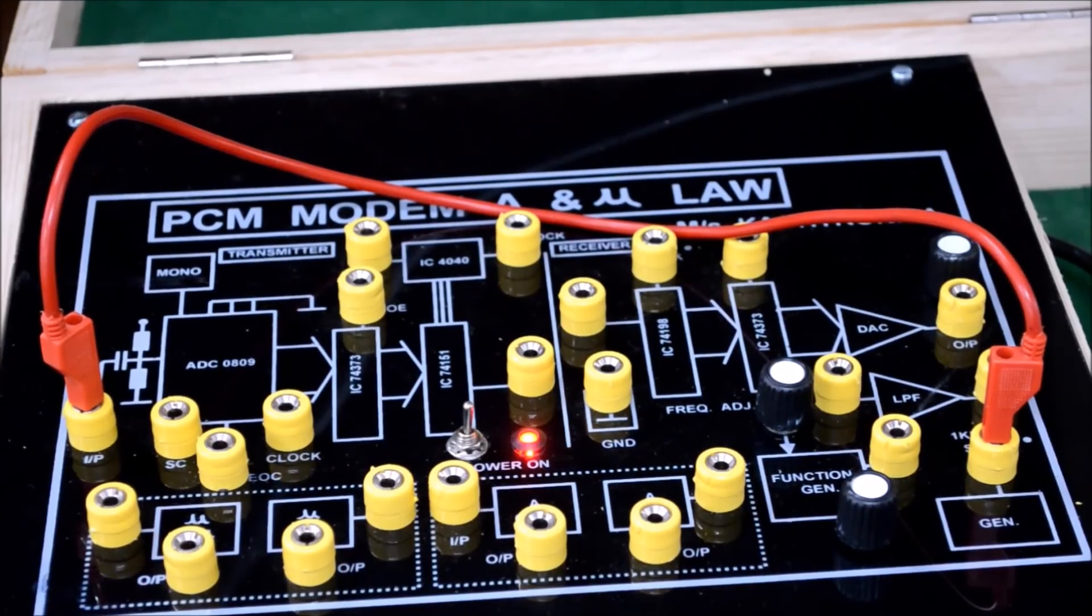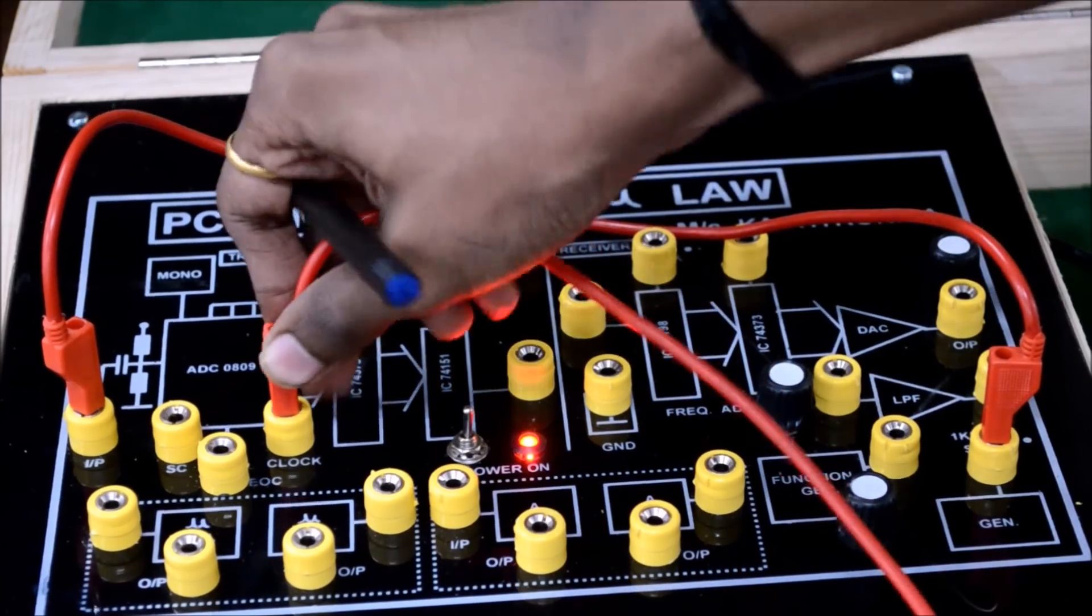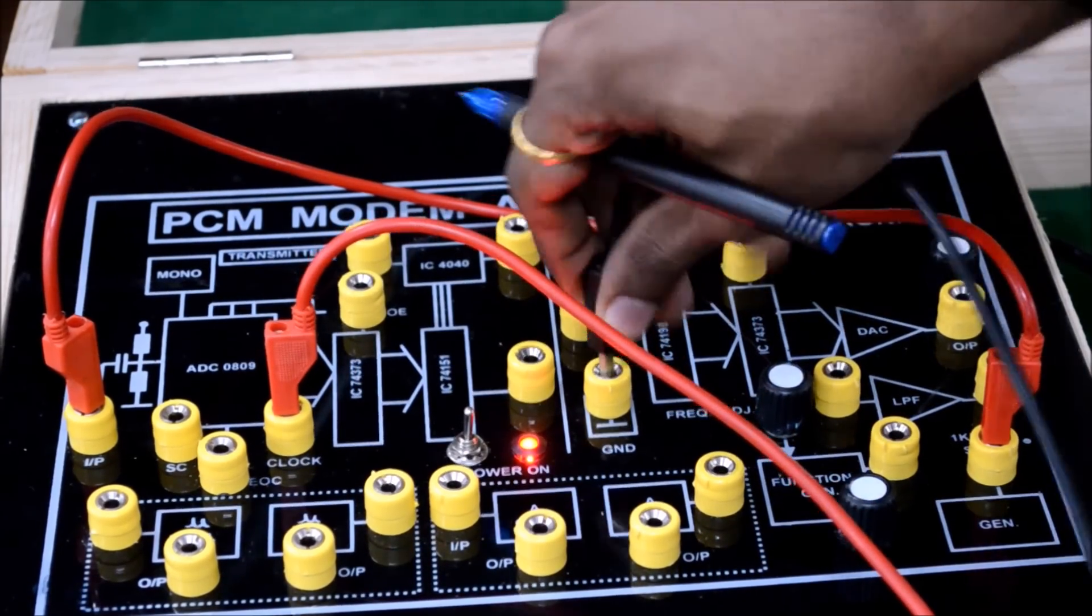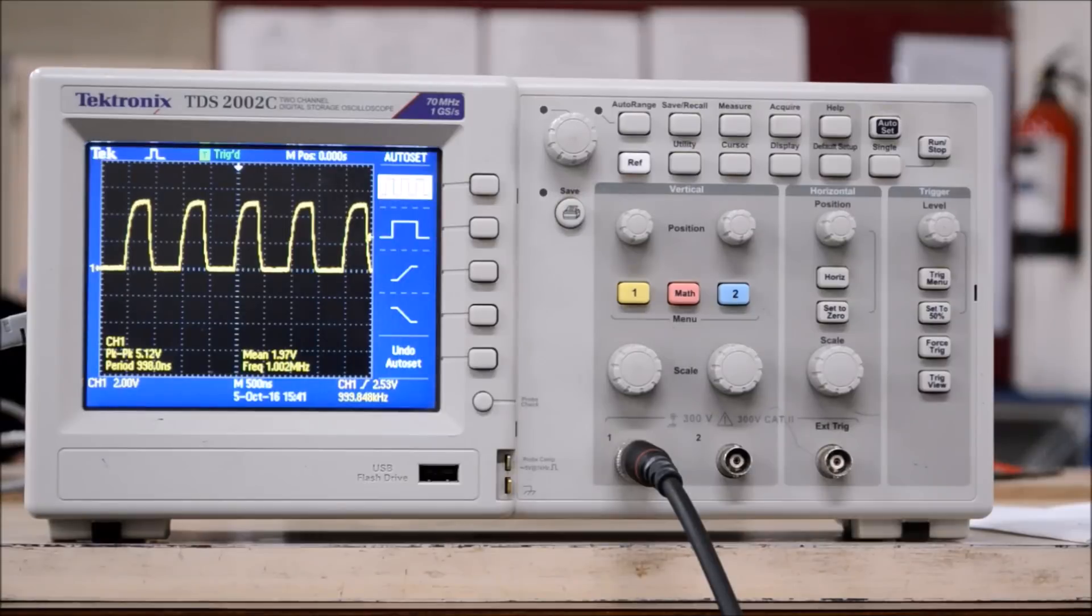To observe the clock of ADC, connect the probe to the clock port present on the kit and ground. This is the clock signal of ADC.